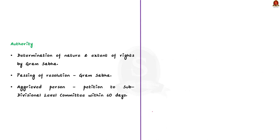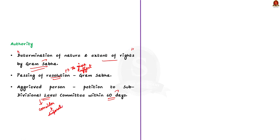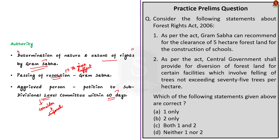Gram Sabha is the authority that initiates the process for determining the nature and extent of individual or community forest rights. After determining, the Gram Sabha will pass a resolution to give effect. If a person is aggrieved by the resolution of the Gram Sabha, they may give a petition to the sub-divisional level committee within 60 days, which will then consider and dispose of the petition. UPSC has already asked many questions about the Forest Rights Act 2006, so make note of the rights recognised — this will be very helpful for upcoming prelims.